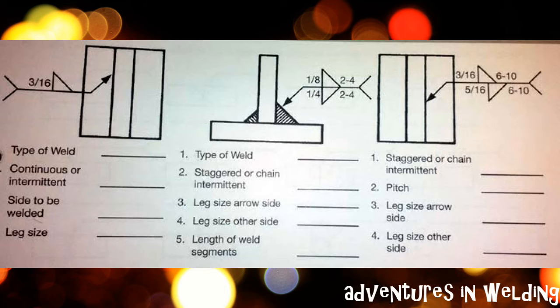Okay, here we're going to do a little review. Let's start with the one on the left. That is to be a fillet weld. It is to be continuous. You are to weld the other side, and the leg size should be 3/16 inch. The one in the middle is a fillet weld. It is going to be a chain weld. The leg size on the arrow is 1/4 inch. On the other side it is 1/8 inch, and the length of your weld segments is 2. And the last one on here, this should be a staggered weld with a pitch of 10, a leg size on the arrow side of 5/16 inch, and the leg size on the other side of 3/16 inch.